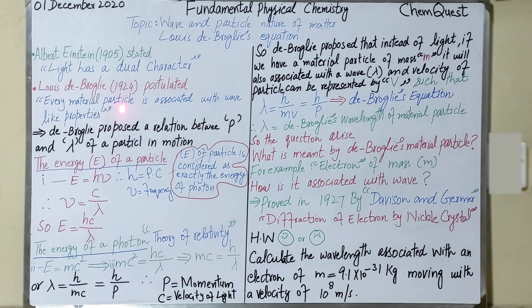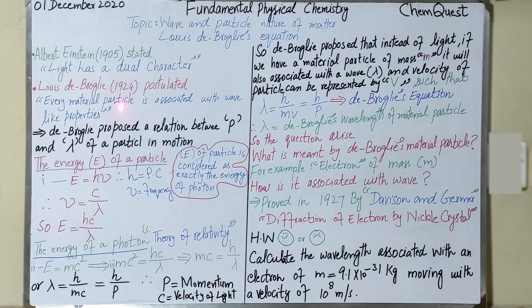We can consider electron as a material particle from the perspective of this lecture. As you know, the electron has a mass associated with it, which is 9.1 × 10⁻³¹ kg. According to de Broglie's postulation, if we consider electron as a material particle, then when the electron travels, wave-like properties will be associated with it — that is, when an electron moves, a wave will be associated with it. We will prove that for every material particle, for example electron, a wavelength is associated with it.